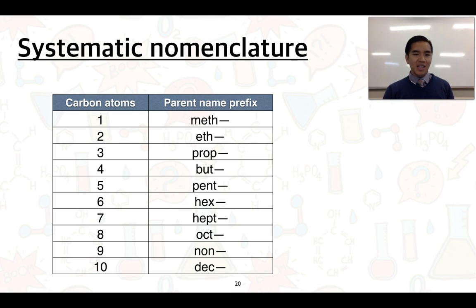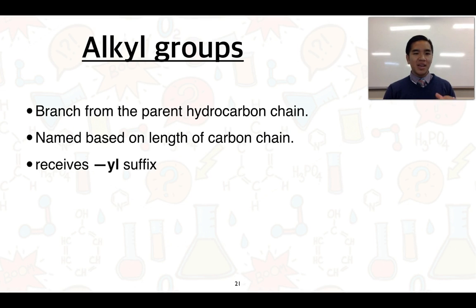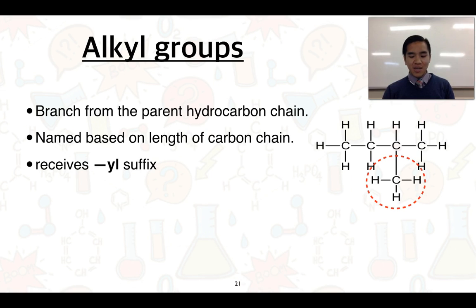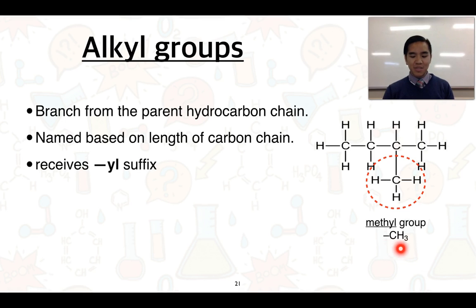We won't need to look at anything beyond eight carbon atoms, but those additional prefixes are provided for reference. From the parent chain, we may have other groups branching off, generally referred to as alkyl groups. They're called alkyl groups because they are derived from alkanes bonded to the parent chain, and their naming is based on the length of their carbon chain. For example, in this structural formula there are four carbon atoms in the longest chain, making it a butane, with a methyl group — one carbon atom — branching from it, represented as CH3.